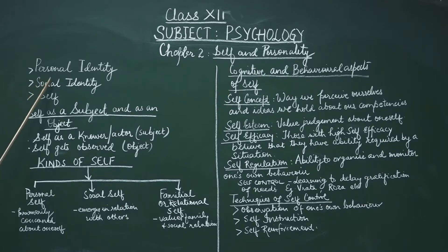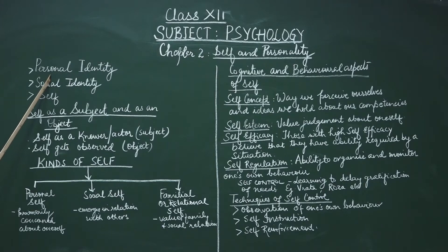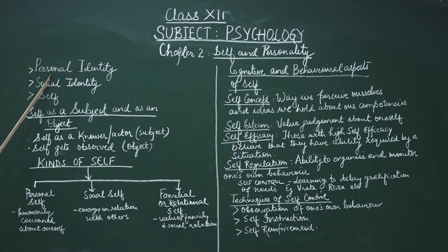What is personal identity? Those attributes of a person that make him different from others is known as personal identity. You also must be having certain attributes, certain characteristics that make you distinct from others. That is what is called personal identity.